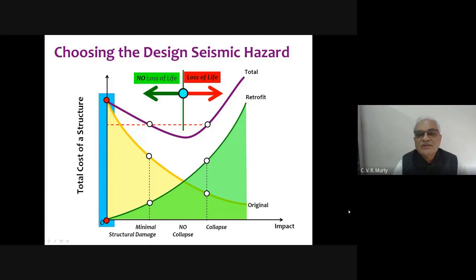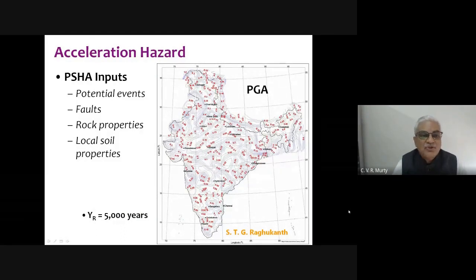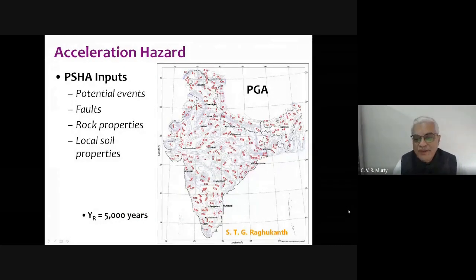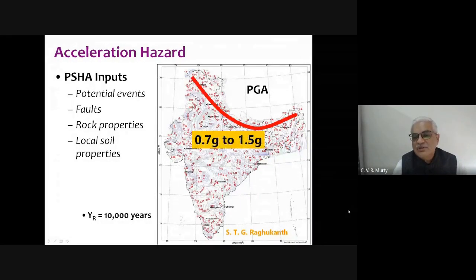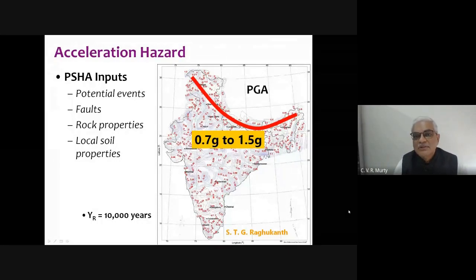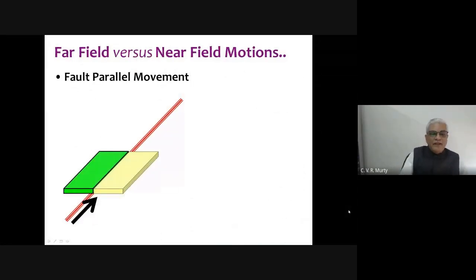Probabilistic seismic hazard inputs include potential fault events, rock and soil properties, and soil layer characteristics. Analysis over different return periods yields PGA maps. Along the Himalayas, PGA values range from 0.7g to 1.5g, and in Peninsular India from 0.5g to 1.2g — whether these values are ultimately accepted in the standard remains to be seen.